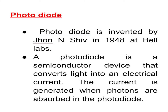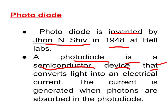A photodiode was invented by John and Shiv in 1948 at Bell Labs. A photodiode is a semiconductor device that converts light into an electrical current. We can say photodiode converts light energy into electrical energy, whereas an LED converts electrical energy into light energy — the photodiode performs the exact reverse operation of an LED.